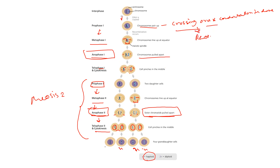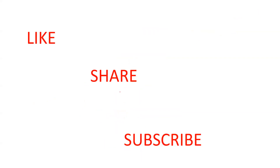Also remember that prophase one is the most complicated process, and crossing over takes place here with the help of an enzyme called recombinase. That covers the topic of meiosis. Please like, share, and subscribe to the channel.